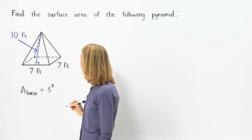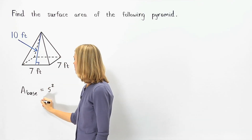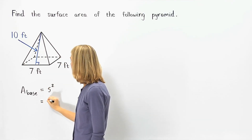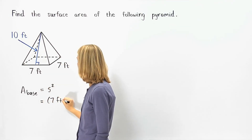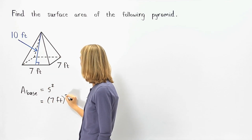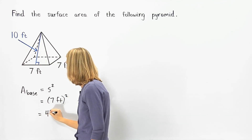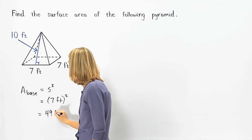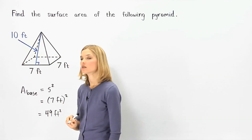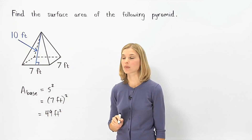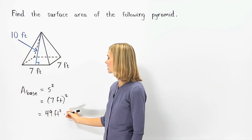Since each side has a length of 7 feet, we have 7 feet squared, which equals 49 feet squared. So the area of the base of the pyramid is 49 square feet.